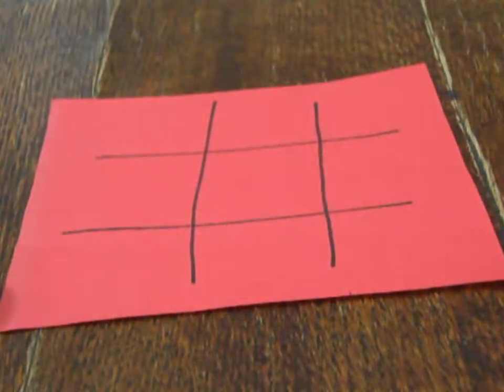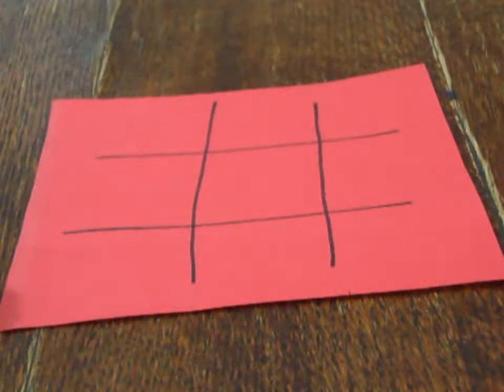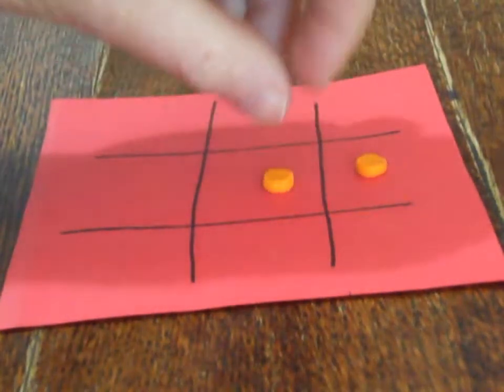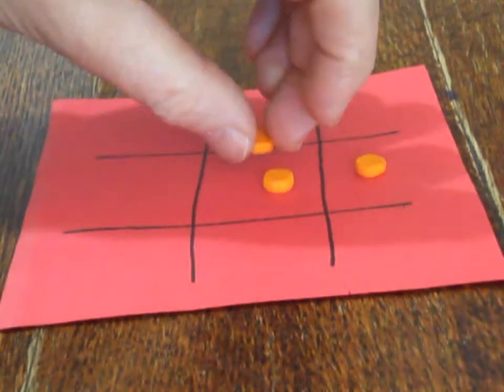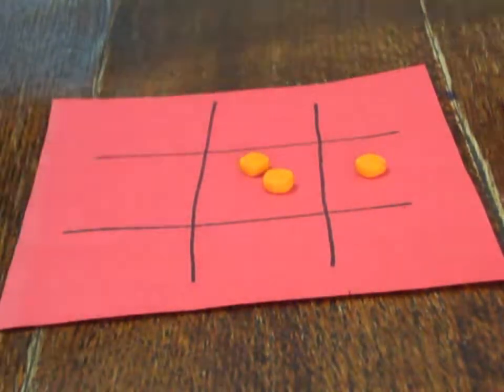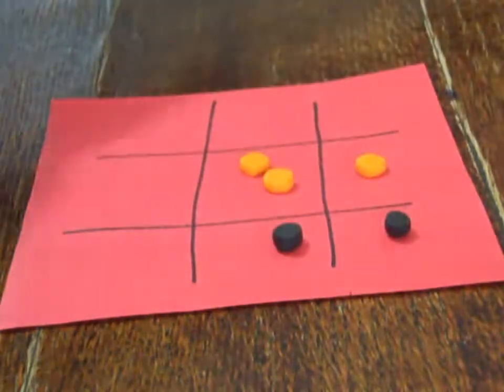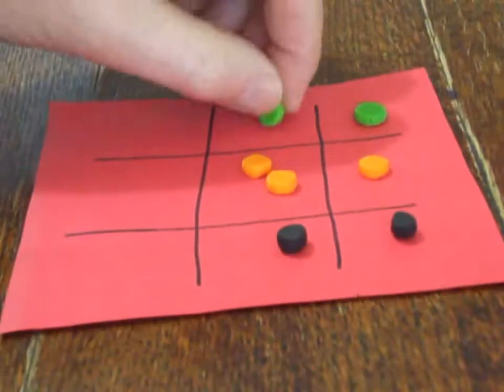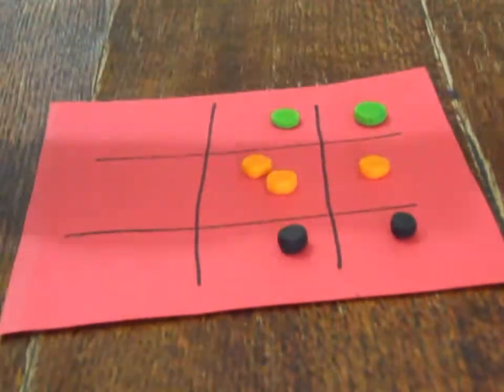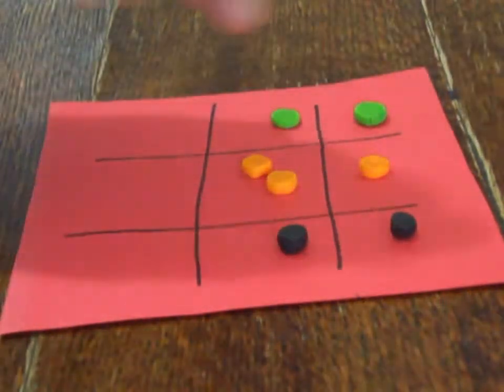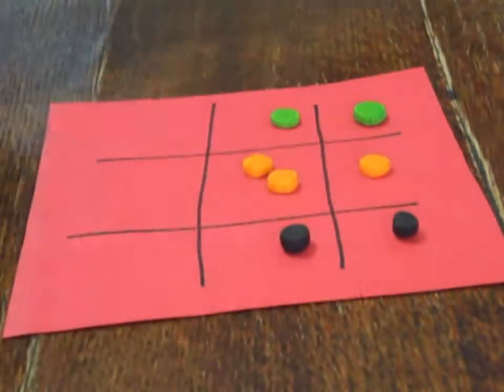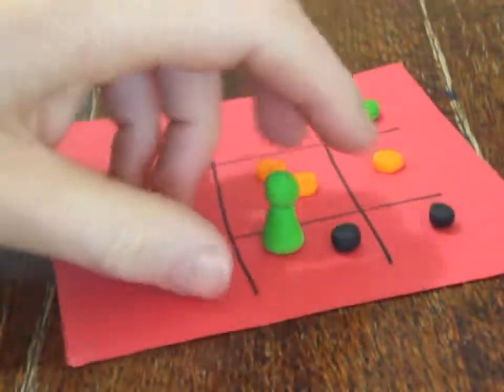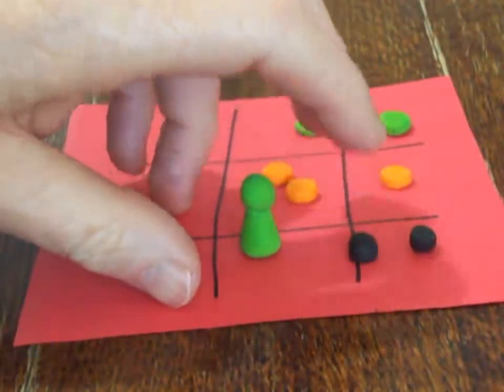If you need quite a lot of counters of each color, you might want to think about making them from Fimo or any other kind of baking clay product with a few different color options. Here I've got black ones and orange ones and some green ones. You can mix the colors of Fimo, of course. These have just been rolled into a sausage and then sliced crosswise. I also played around with making a pawn type shape out of Fimo as well, so that came out quite well.